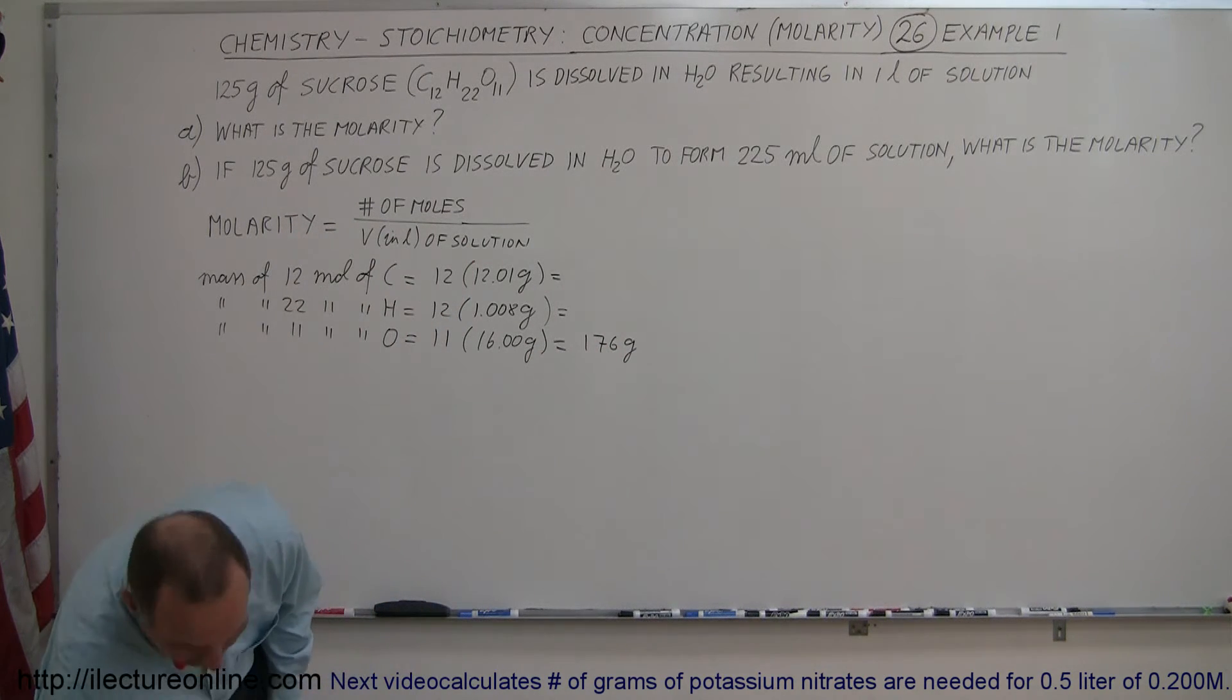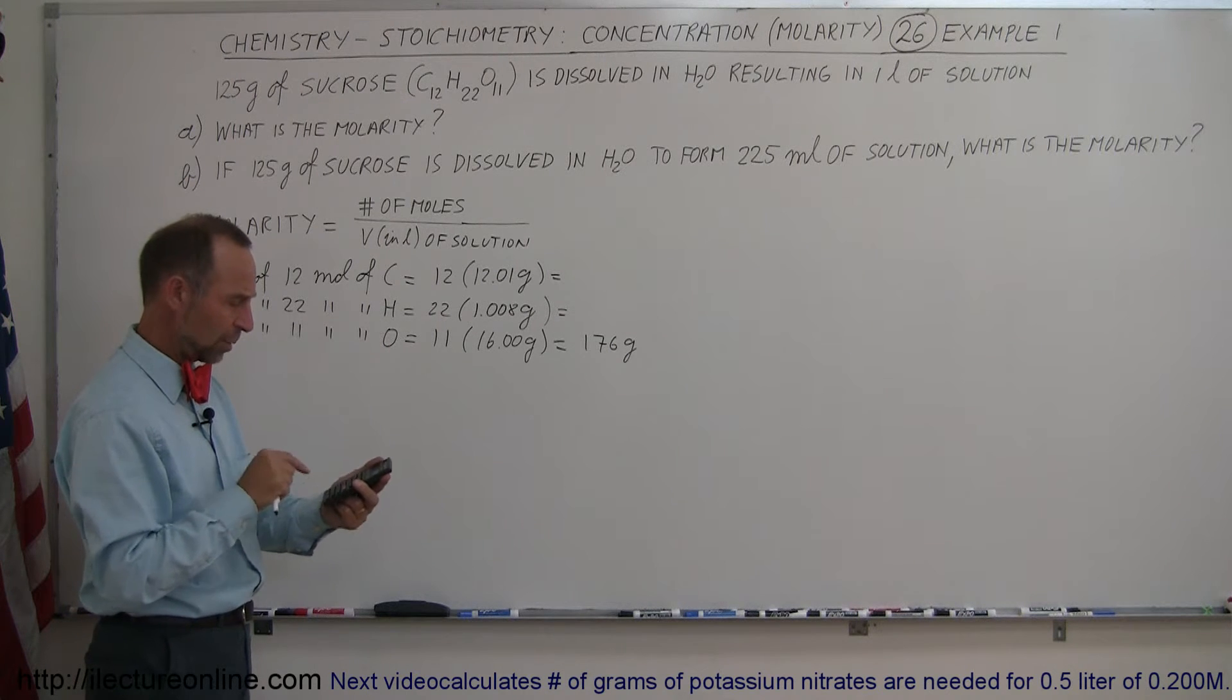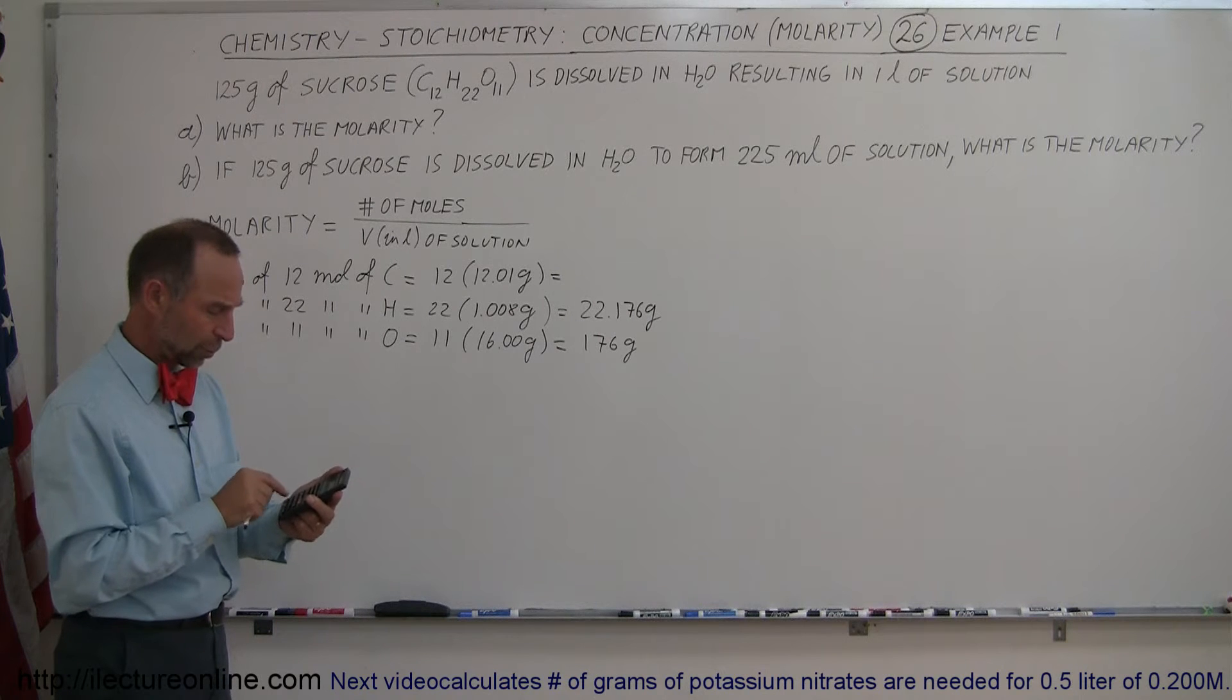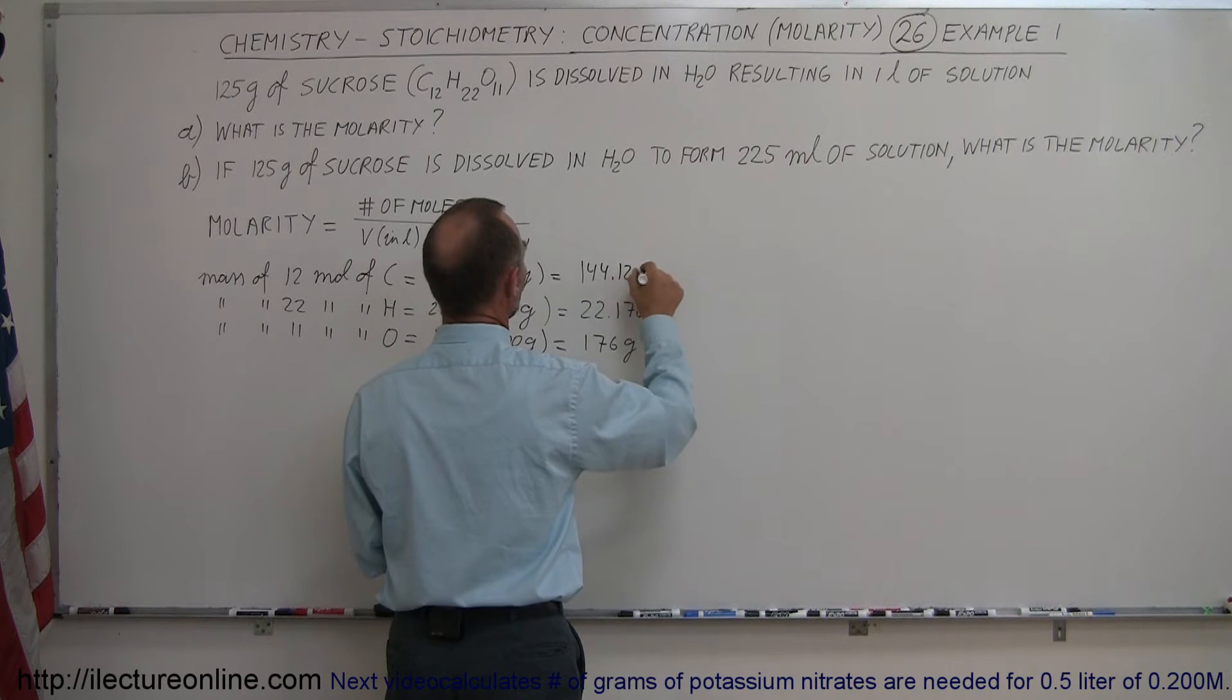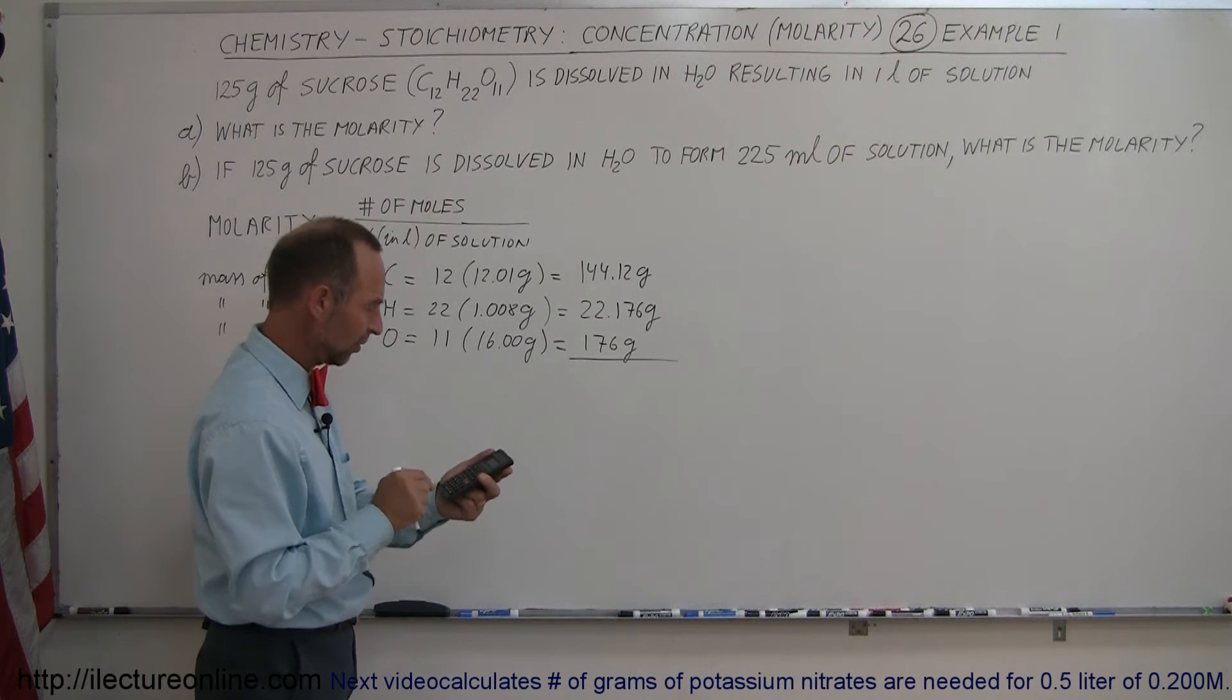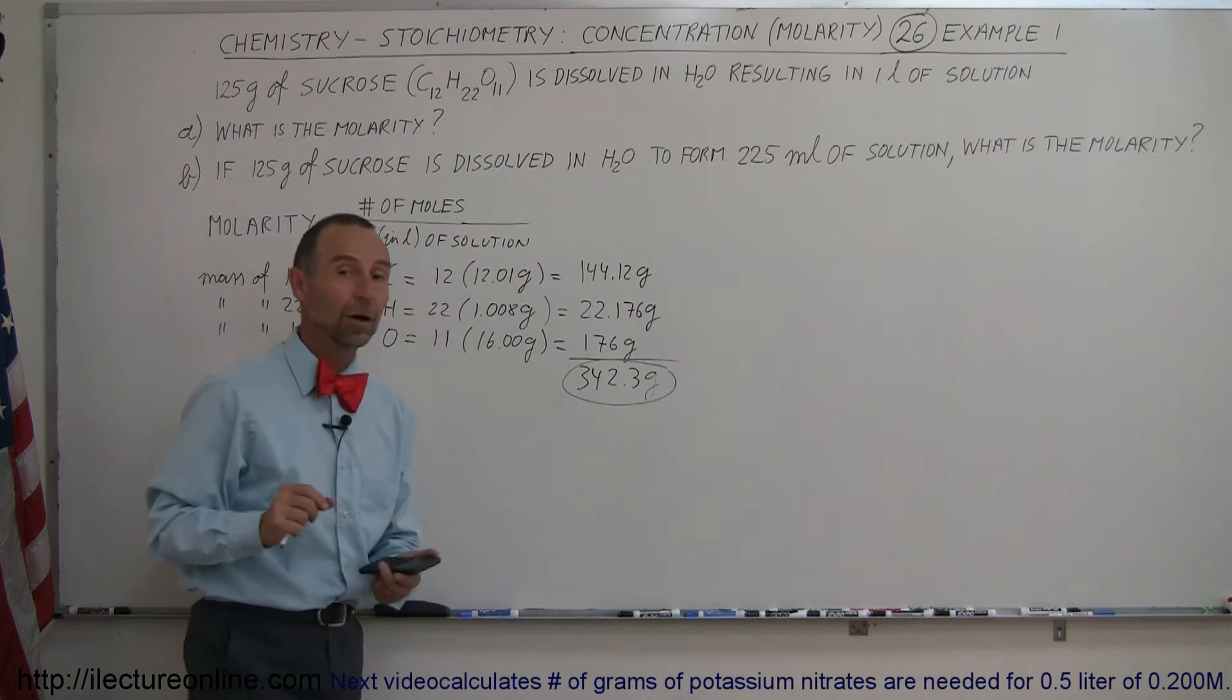What about the others? I better grab a calculator for that. Let's do it again. 1.008 times 22 equals, that gives us 22.176 grams. And then finally, we have 12 times 12.01, that gives us 144.12 grams. So if we add all that together, plus 22.176 and plus 176 equals, that gives us 342.3 grams. So this is the molar mass of sucrose.